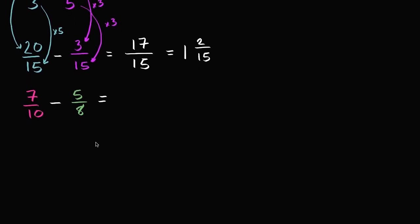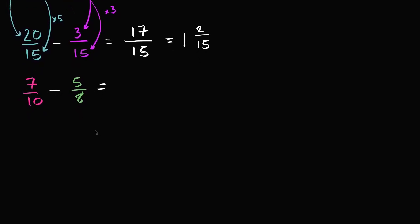What is the least common multiple of 10 and 8? It doesn't have to be the LCM, but it keeps things simpler. Starting with the larger number, 10, we find multiples and check if they're divisible by 8. 10 isn't, 20 isn't, 30 isn't, 40 is. 40 is a multiple of both 10 and 8 — in fact, it's the least common multiple. So we can rewrite both fractions as something over 40.